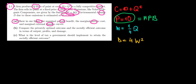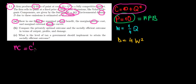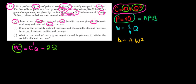We also want the marginal private cost, which is the derivative of the total cost function with respect to quantity. The cost function has a constant term of 10 and a term Q squared. The derivative of 10 with respect to Q is zero, and the derivative of Q squared is 2Q. So the marginal cost equals 2Q.